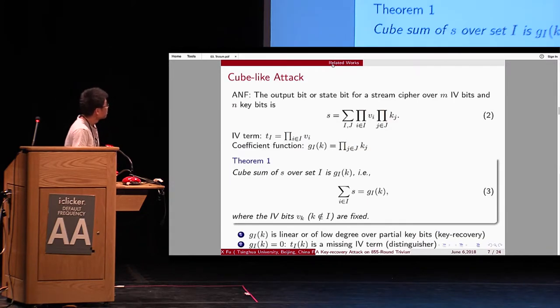Some related works. The cube attack. An output bit of a stream cipher can be rewritten as follows. So, we define these terms as every term. And the corresponding coefficient function is like this. So, the cube sum of s over cube set is the coefficient function.